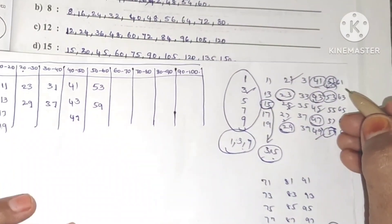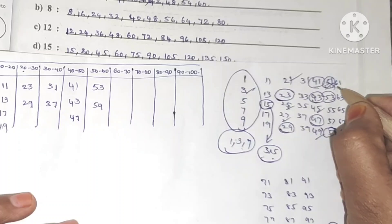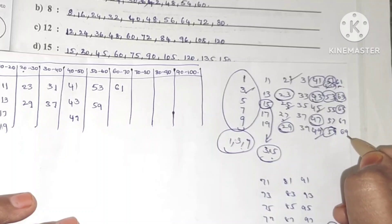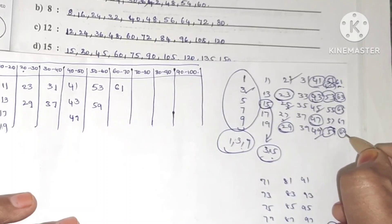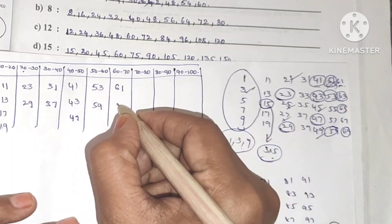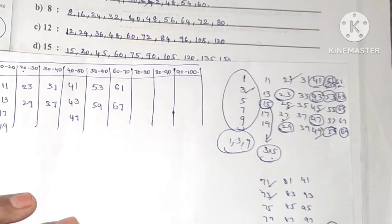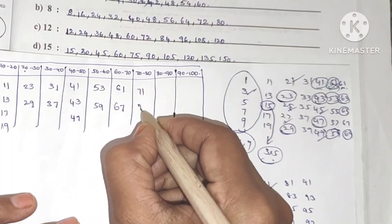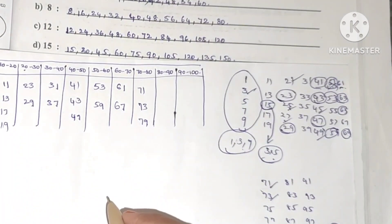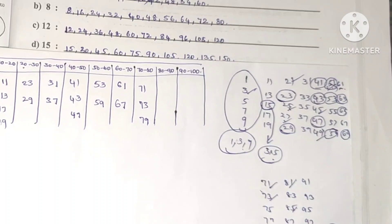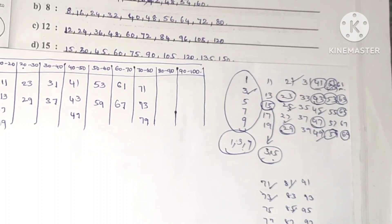61 is not in any table, so it is prime. 67 — checking: 7×9=63, 5×13=65, so 67 is prime. 69 is not prime. 71, 73, and 79 are not in any table, so they are prime.